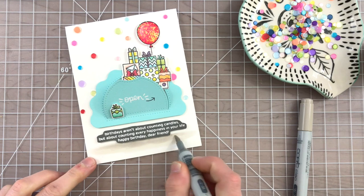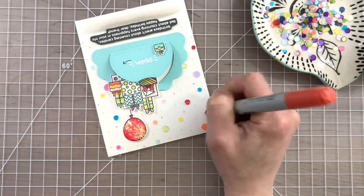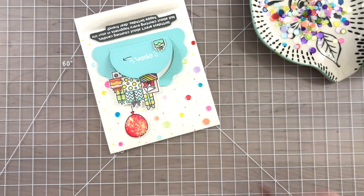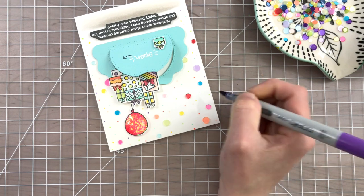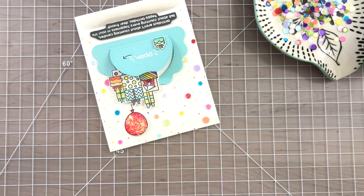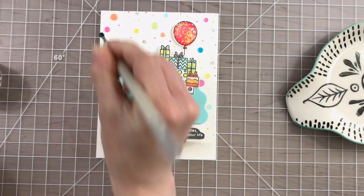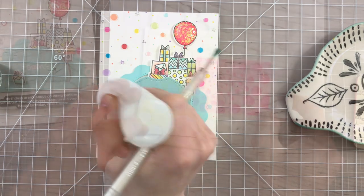The background I felt needed a bit more confetti and more color so I brought in those same Copic markers that I used to color in the presents and I'm just dotting different colors of those markers in and around the bigger confetti pieces so this looks like confetti that's in the background. And of course I couldn't stop there. I needed to embellish this further with some of those pretty clear stars from Studio Katia.